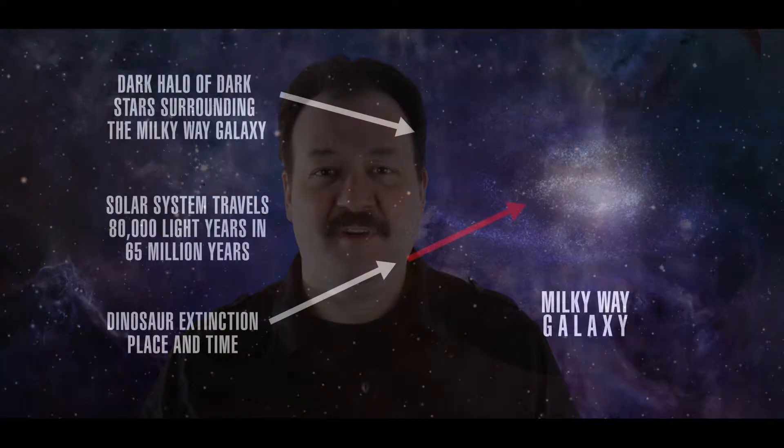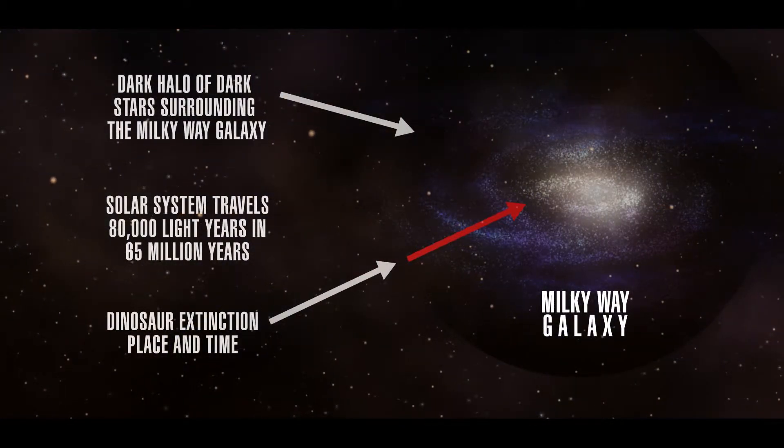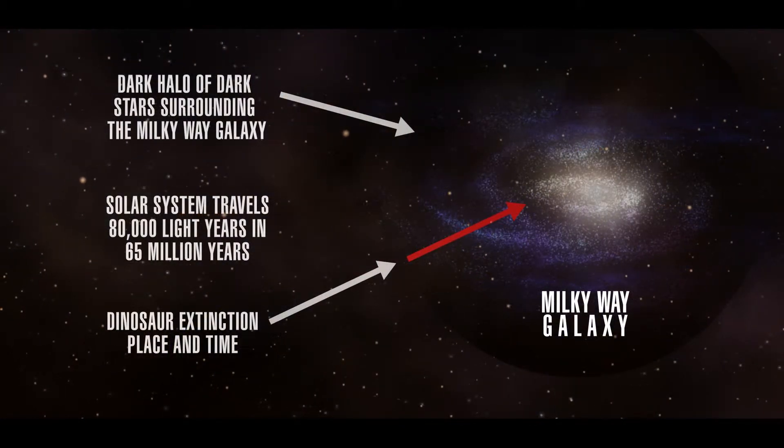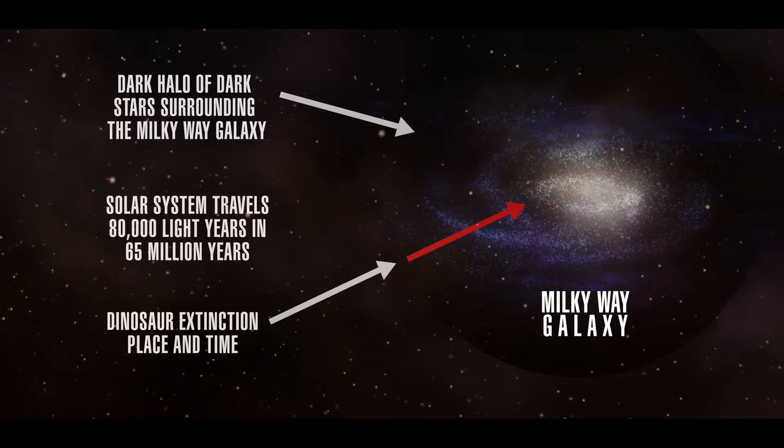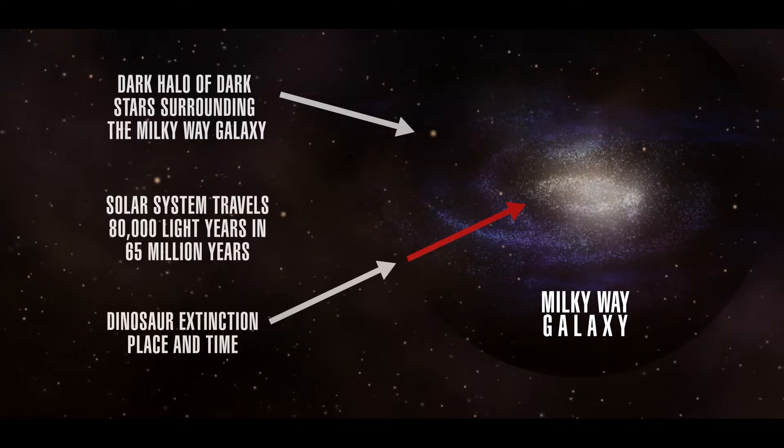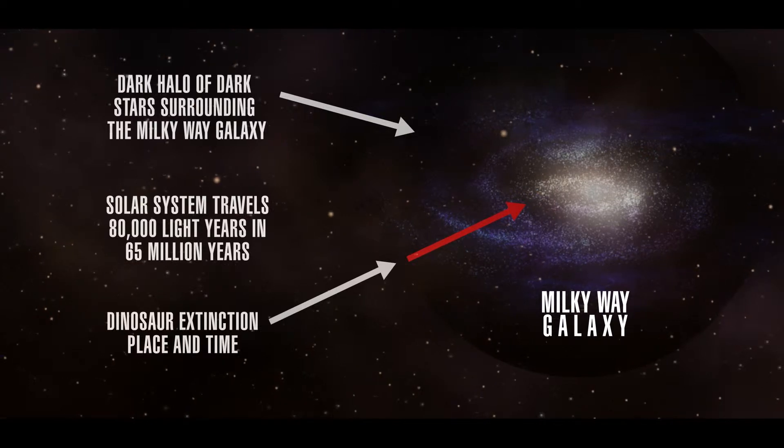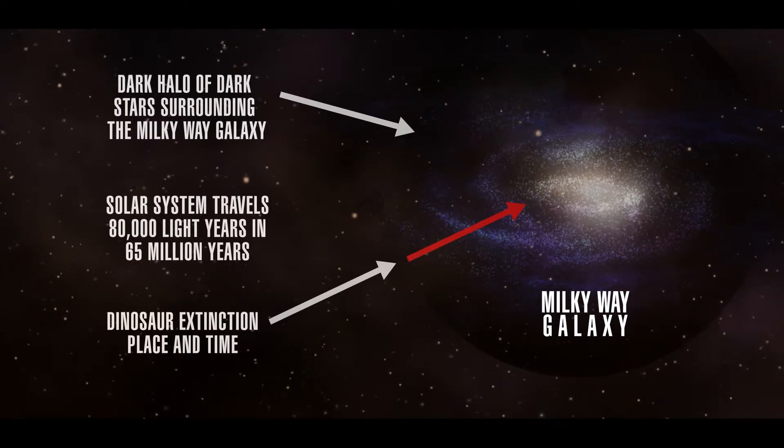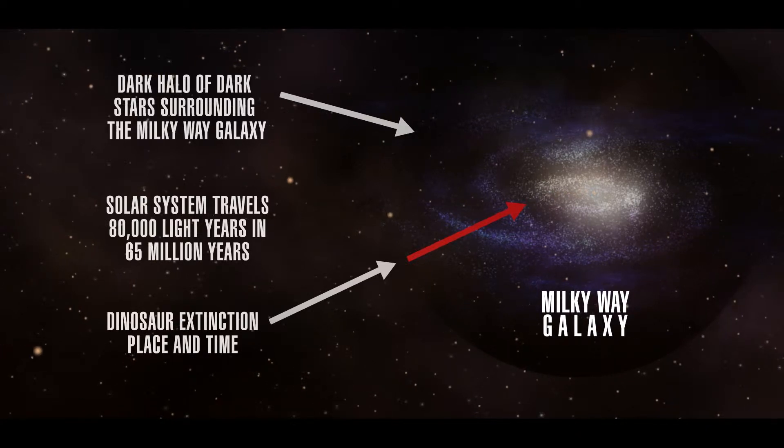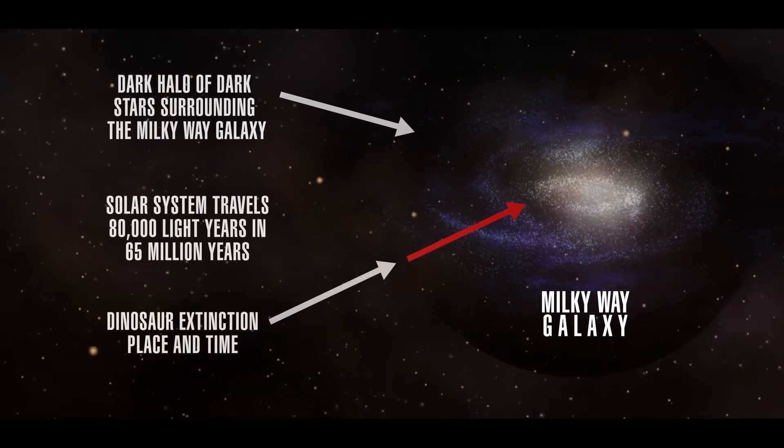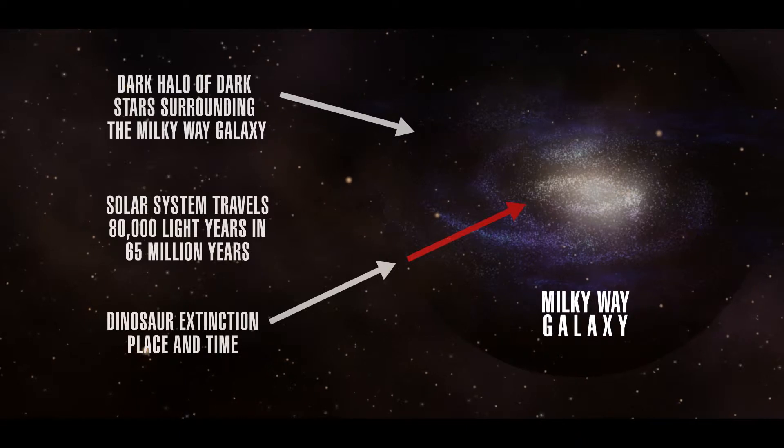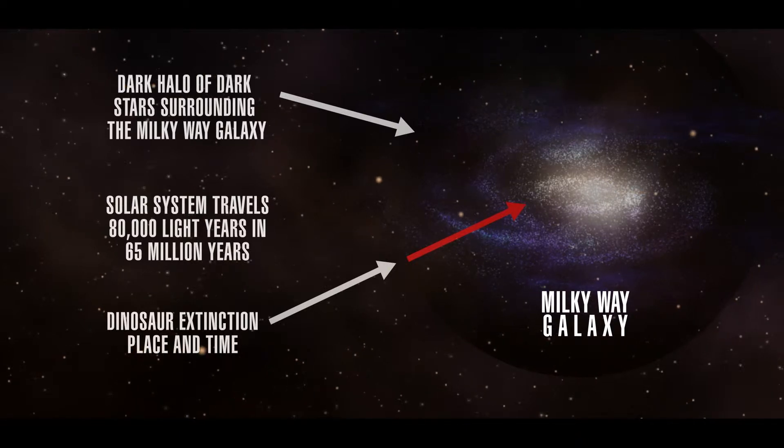Earth's history records a dramatic event 65 million years ago, the extinction of the dinosaurs. The solar system traveled 80,000 light-years in the past 65 million years. It is possible that the entire solar system experienced a traumatic event 65 million years ago, such as entering into the Milky Way galaxy's dark halo from intergalactic space.